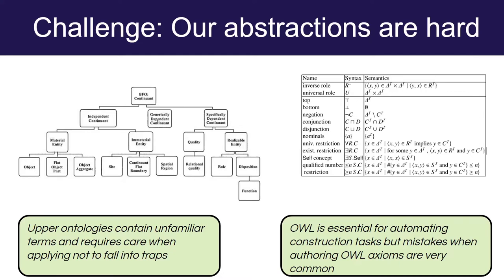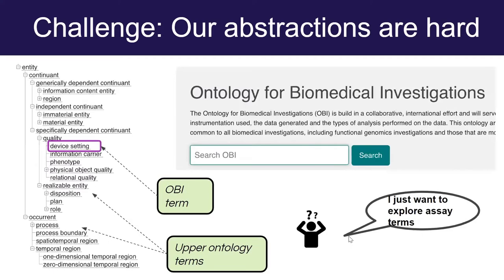The abstractions we use are pretty hard for a lot of people. This includes the abstractions in upper-level ontologies, but also the ontology language itself. OWL is incredibly powerful and very useful for building ontologies, but the ways in which it's expressed and the abstractions we have to map to are not always the most intuitive for biologists or data scientists. Concepts like 'independent continuant' and 'specifically dependent continuant' aren't always immediately obvious to people.